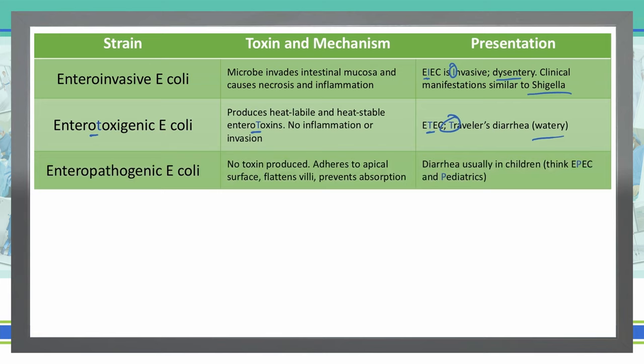Entero-pathogenic E. coli, or EPEC, has no toxin produced. It basically adheres to surfaces, flattening the villi and preventing absorption. If we're preventing absorption in the gut, we're going to see diarrhea. Most of the time this occurs in children, so with EPEC, the 'P' can help you think of pediatrics — diarrhea in children.